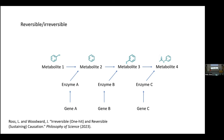A third distinction: some causes produce their effects reversibly, and others produce their effects irreversibly. This refers to the ability of a cause to undo its effect. A nice example of reversible causation is the light switch: I can turn the switch on, the lights turn on, turn the switch off, the lights turn off, turn it back on again — it's reversible, you can do it over and over again.